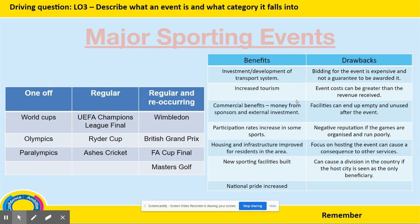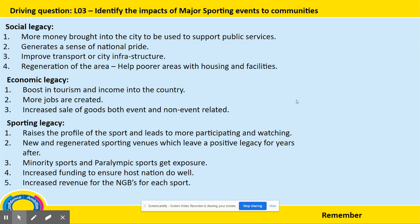LO 3 — you will look at major sporting events, split into three main areas: one-off, regular, and regular and reoccurring. As you can see from the table, there are different examples for those three categories, and we'll look at the differences between them and why the examples fit into each. You will also look at the benefits and drawbacks of hosting a major sporting event and what that may mean for the nation that hosts it. You will also look at the three target legacies, which are social, economic, and sporting, and what each of these means when hosting a major sporting event.